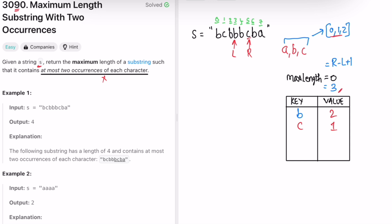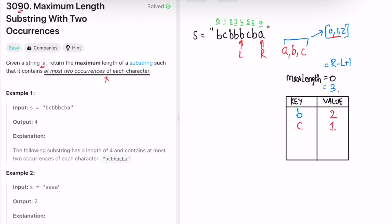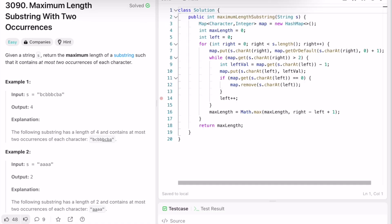The max range remains three. Moving the right pointer again, it points to b and b's value changes to three — the condition is violated again. We decrement the value at left; b becomes two, and we move left forward. The value at right is now within range, so we move the right pointer to a. A is not present so we set its frequency to one. Right is at index seven and left is at index four, so the range is four. Four is greater than three, so we update max length to four. Moving the right pointer again goes beyond the array, so we end the iteration and return four as the output.